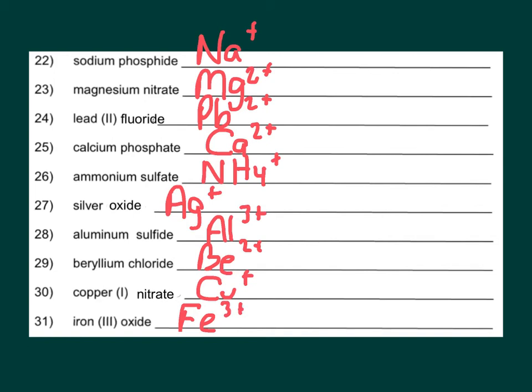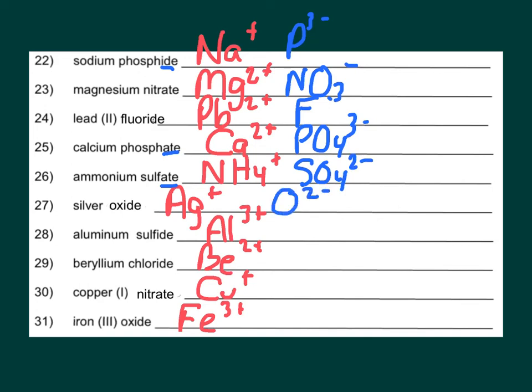Now let's do the negative parts. Phosphide, that means it's a monatomic element because it ends in "-ide". Phosphorus has a three minus. Nitrate is one of those polyatomic ions, it's NO3 minus. Fluoride, it's a halogen, it has a minus one charge. Phosphate, notice again the difference: phosphide, phosphate. Phosphate is a polyatomic ion. Sulfate, also a polyatomic ion, SO4 with a two minus. Oxide, O with a two minus, oxygen has a minus two. Sulfide, notice again the difference between sulfate and sulfide. Sulfide is just sulfur with a two minus.